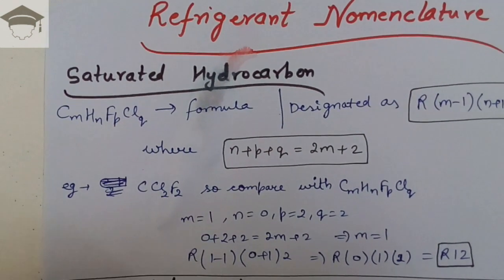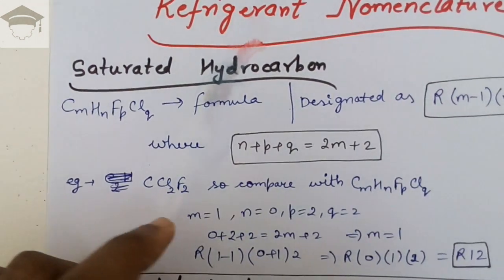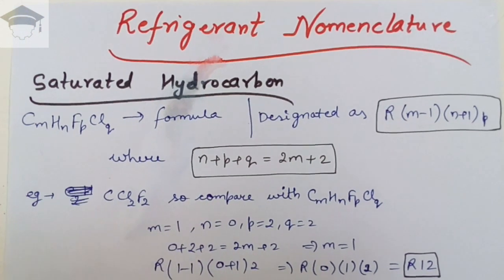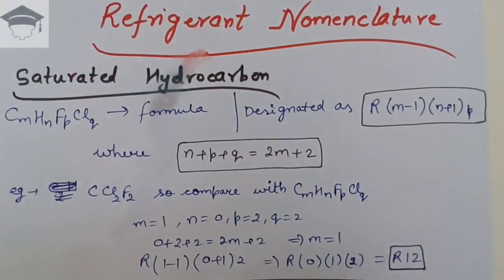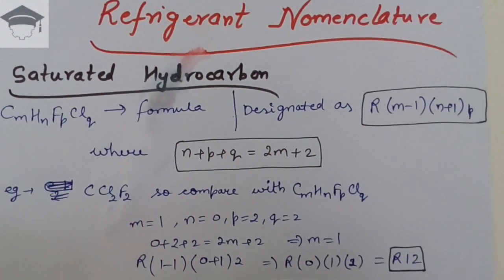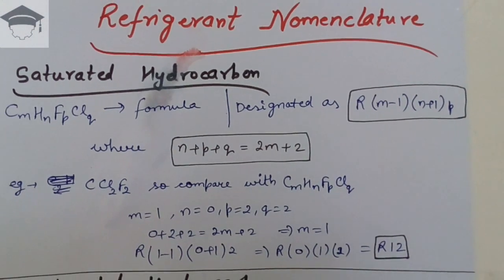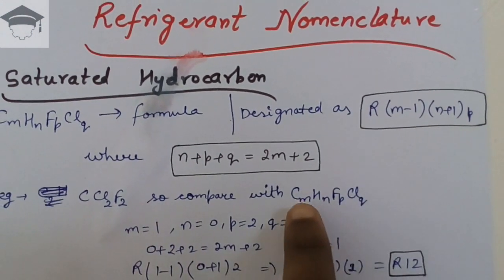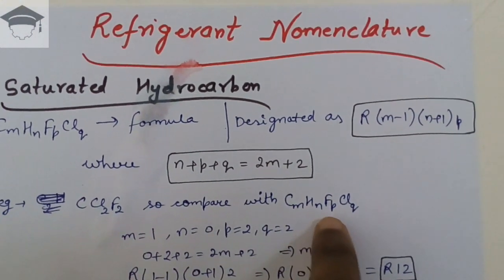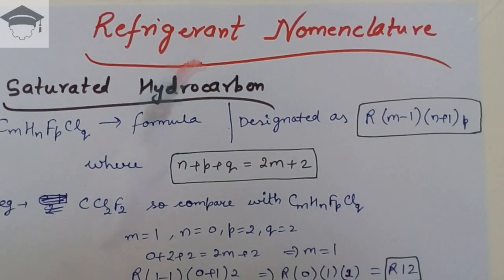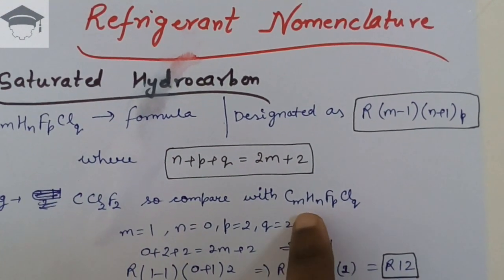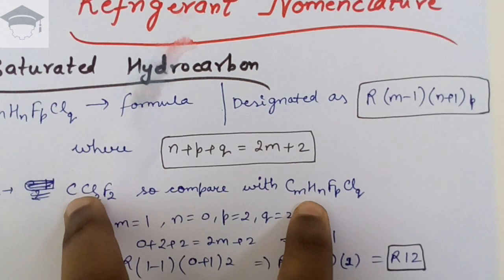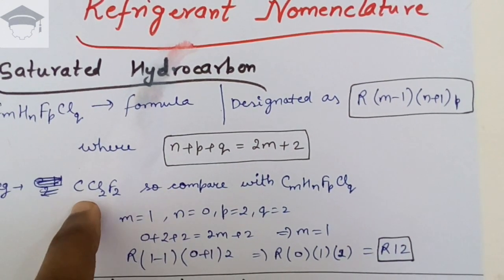Now let me explain with the help of an example. Suppose we have CCl2F2 — this is a refrigerant in its traditional name. We have to write it using refrigerant nomenclature. To do so, we compare it with the general formula CmHnFpClq.